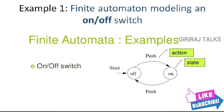Let us take one example. The simplest non-trivial finite automaton is an ON or OFF switch. The device remembers whether it is in the ON state or the OFF state, and it allows the user to press a button whose effect is different depending on the state of the switch. The finite automaton model for the switch is shown in the diagram on the screen. As for all finite automata, the states are represented by circles.